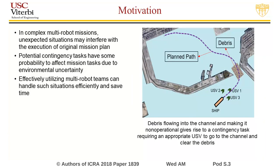In this example, debris may flow into the nearby channel with 50% probability due to the water current and make the channel non-operational. In that case, a contingency task arises with 50% probability requiring an appropriate USV to go to the channel and clear the debris, thereby enabling other vehicles to use the channel.